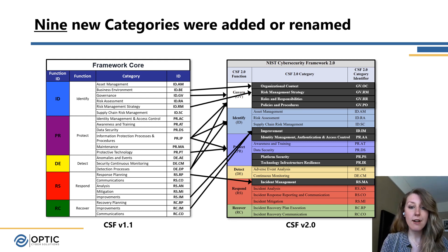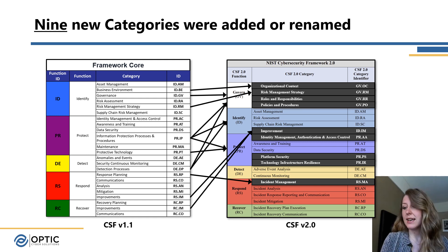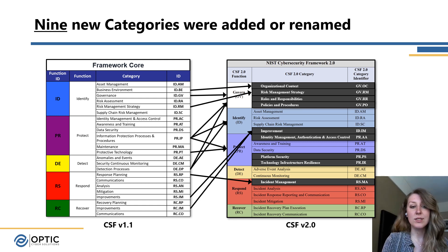A couple of other areas worth highlighting are platform security and technology infrastructure resilience — two new ones that represent some of the larger changes, moving content from information protection processes and procedures, protective technologies, and related areas, while expanding on backups and similar topics. Those are areas where you'll want to take a closer look. Incident management was also added, largely taken from response planning, and we can see some of that alignment there.